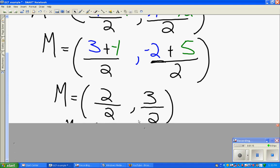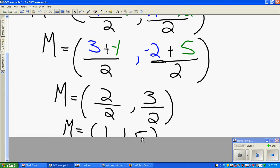I now finish the problem by simplifying. 2/2 = 1, and 3/2 = 1.5, so the midpoint of the line between these points is (1, 1.5).